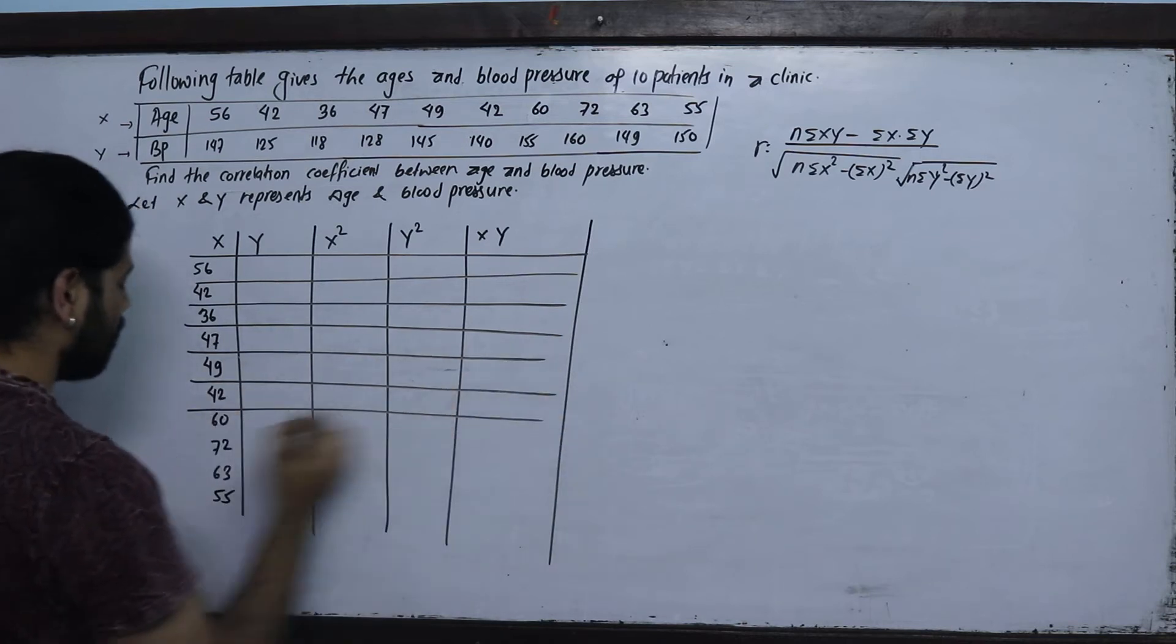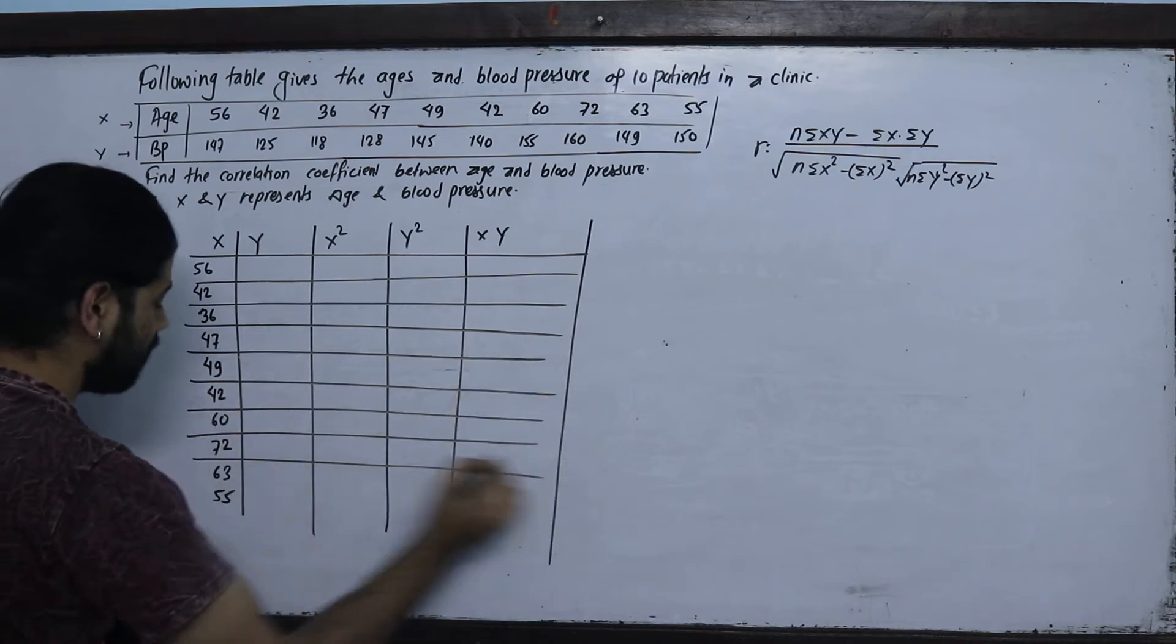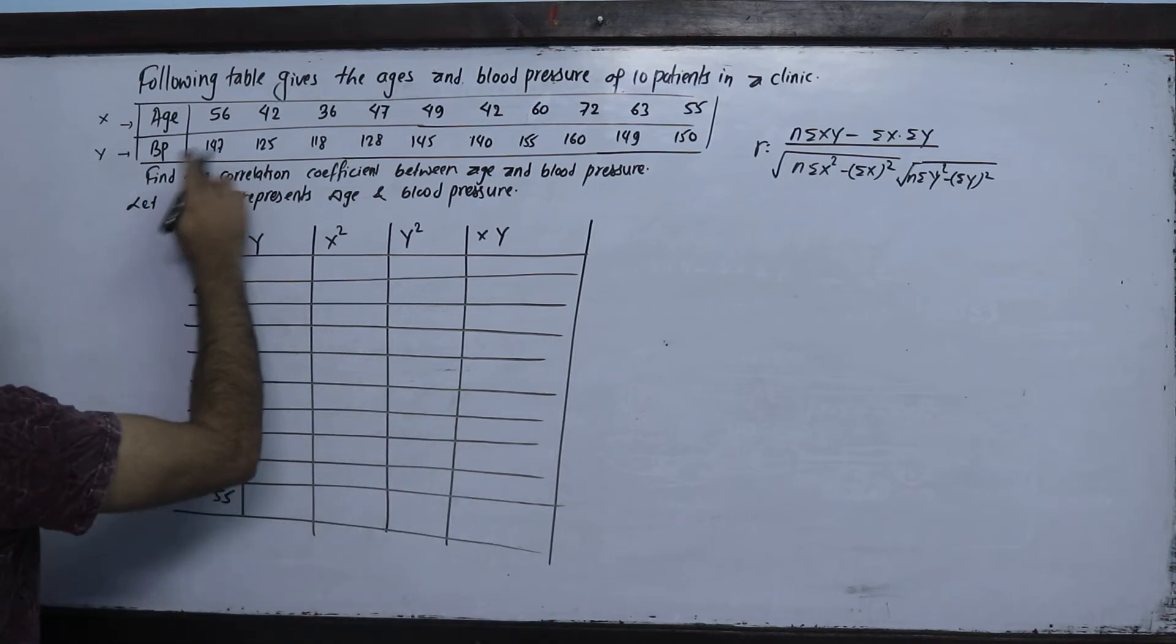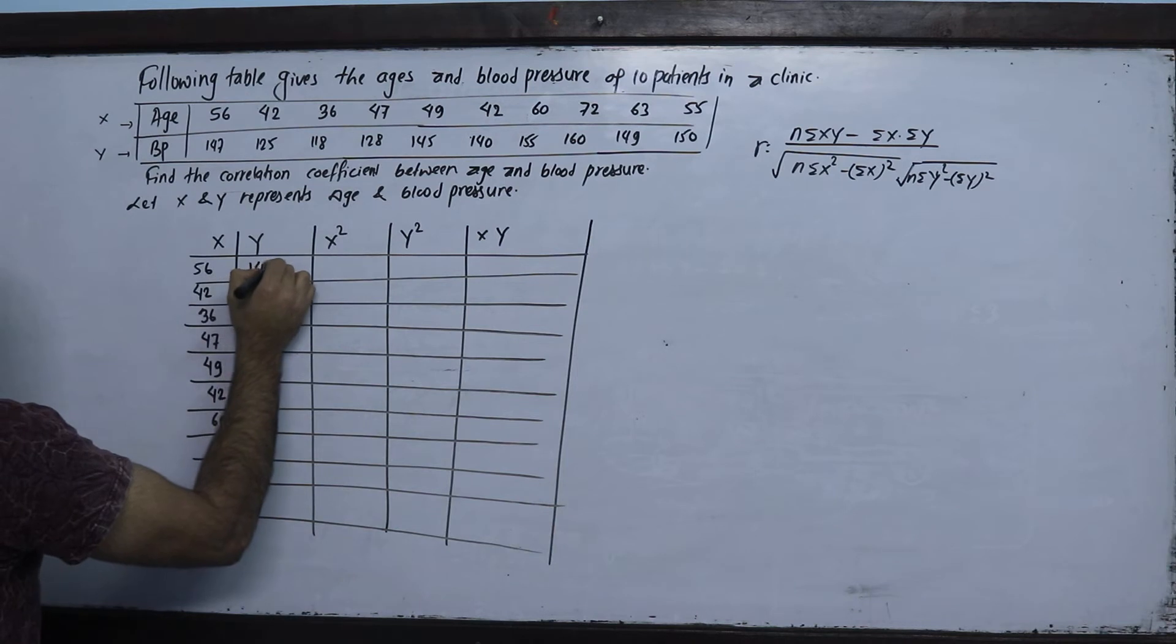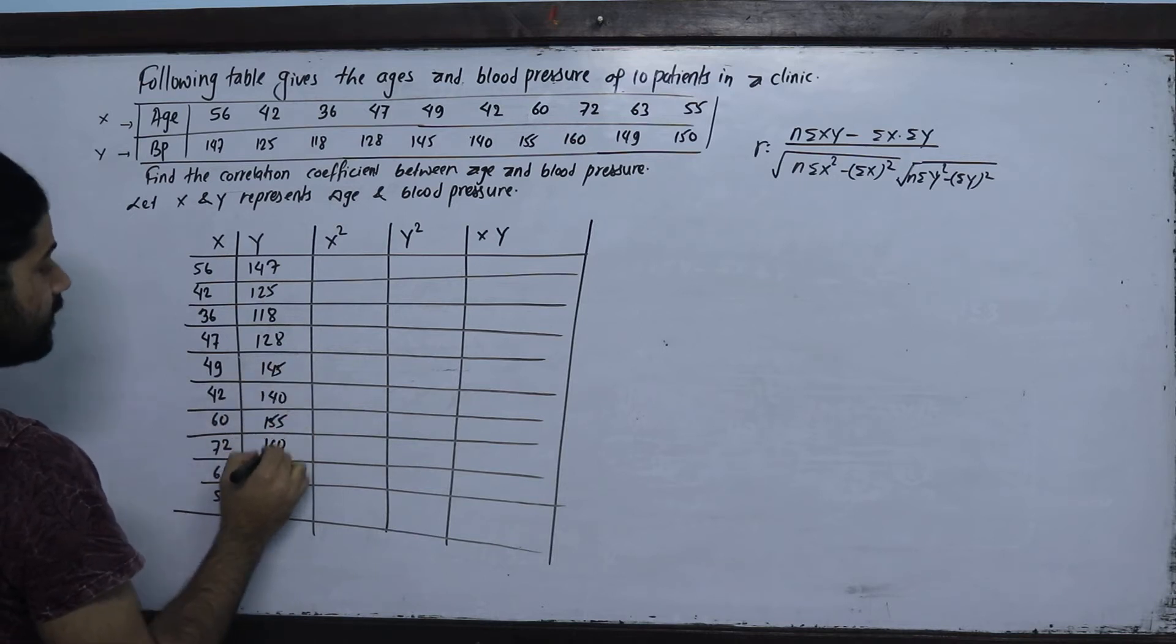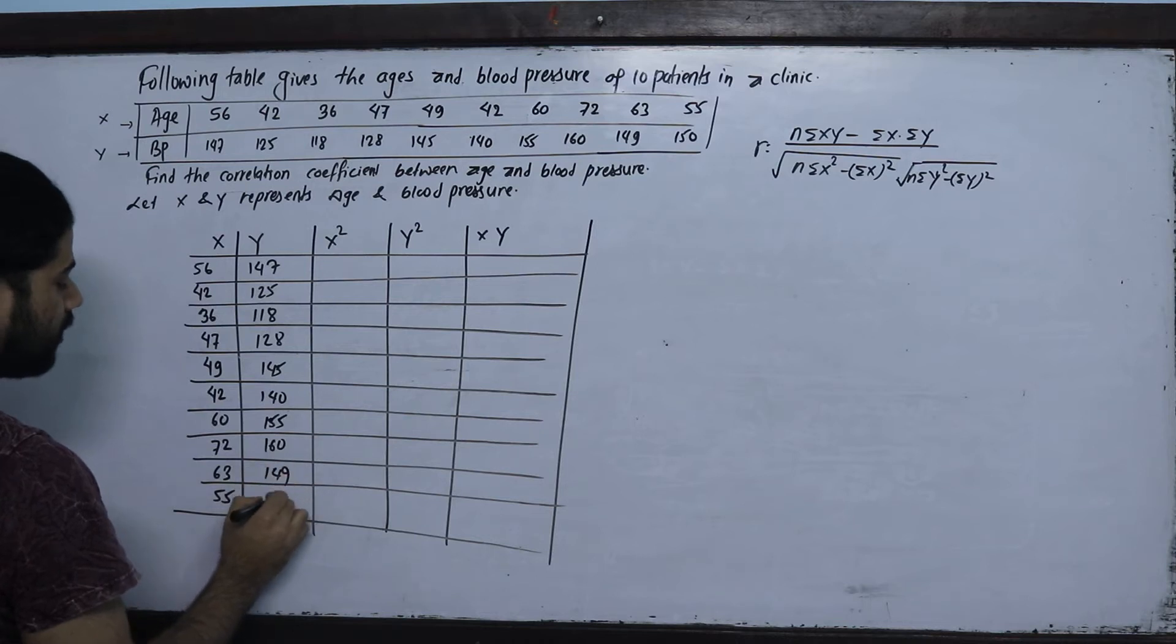Now the y values, the blood pressures are: 147, 125, 118, 128, 145, 140, 155, 160, 149, 150.